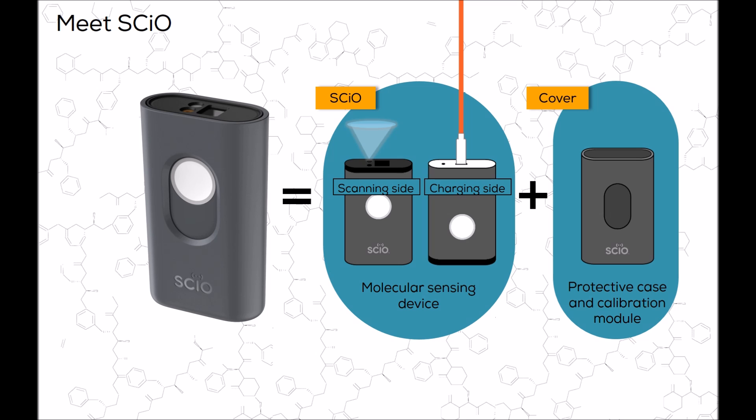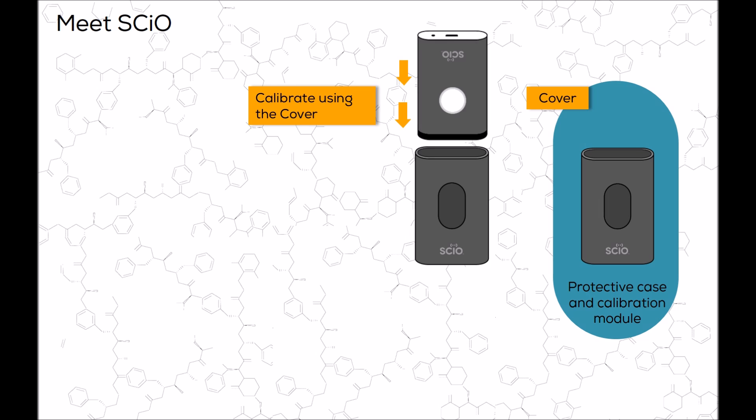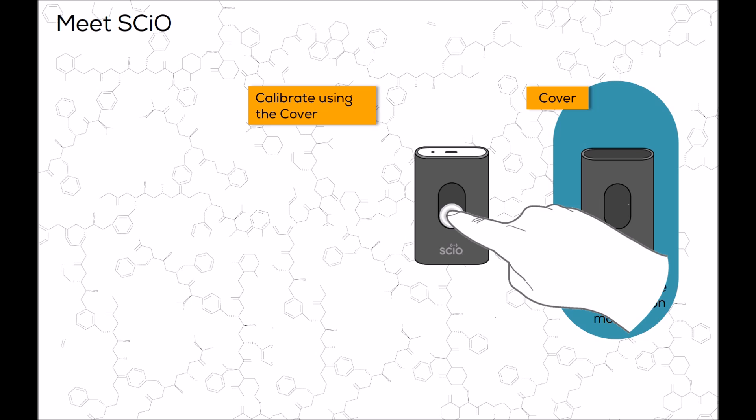The SCiO Cover is both protective and functional. Your SCiO requires occasional calibration and the calibration device is located within your SCiO Cover. To calibrate SCiO, place your SCiO with the optical head down into the cover and click the function button or tap Calibrate in the app.